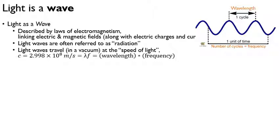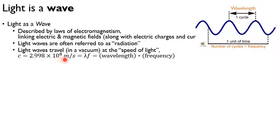Light travels at a fixed speed, and in a vacuum where there's no other matter, there is the speed of light. C is this constant, roughly 3 × 10⁸ meters per second. This is known as the speed limit of the universe because nothing can move faster than this. When light is moving through outer space, there's no matter that it's going through, so it moves at this speed. Light can move slower in a medium like water or glass, but we're not going to worry about that for this class — we're talking about space.